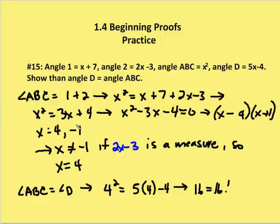So now we're asked to prove that angle ABC is equal to angle D. I know that angle ABC is equal to x squared, as was given to us. I know that angle D is equal to 5x minus 4. So I plug in 4 for both values of x, and I come up with 4 squared, which is equal to 16.